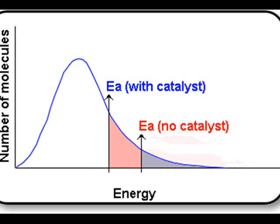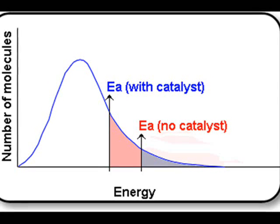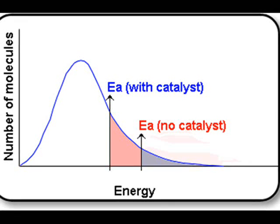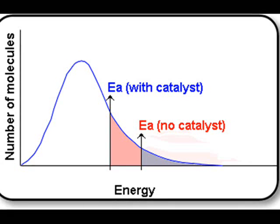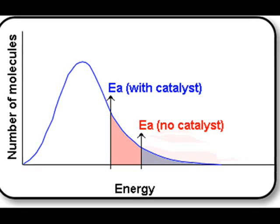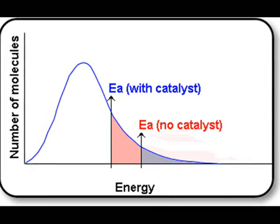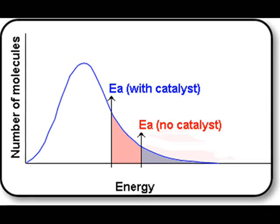As you can see on this diagram, the red label is the activation energy with no catalyst. That blue area is quite small. But when you add a catalyst, the activation energy becomes less. So you've got a higher area, and more particles therefore that can react, which means the reaction is going to go faster.